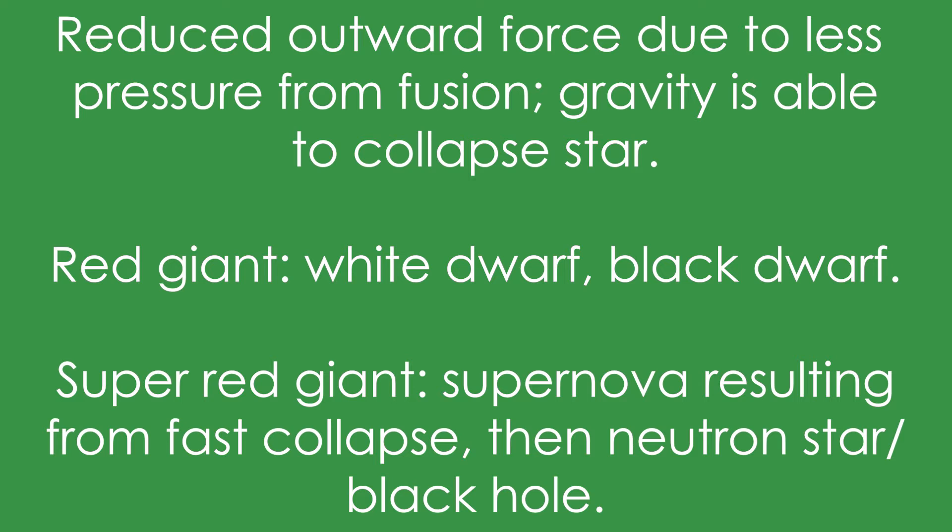Super red giants, they collapse so fast that they produce a supernova, sort of a shockwave from the implosion. And then we're left with a neutron star or even a black hole at the centre and then the outer bits of the supernova go on to form a nebula.